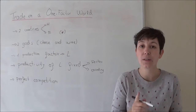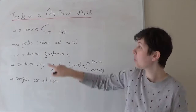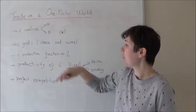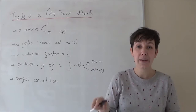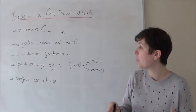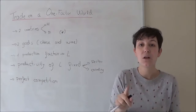We are going to incorporate another economy. Instead of just one country, we will have a world composed of two economies: Home and Foreign. Whenever we talk about the foreign economy, we use an asterisk to indicate that the information is for that economy. We have two countries, two goods — cheese and wine — and one production factor, labor, which is fixed by country.